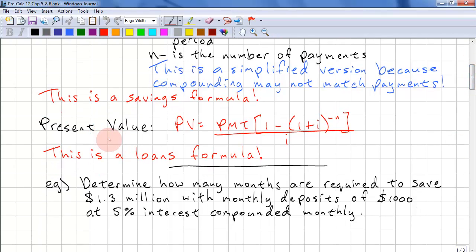This is the present value formula. It's for loans. Present value equals payments times in brackets 1 minus in brackets again 1 plus i raised to the power of negative n, close that bracket and all over i. Remember again i is the interest rate per compounding period which has to match the payment period.